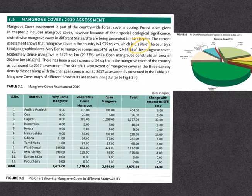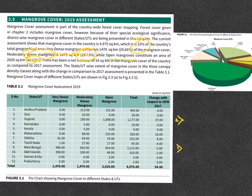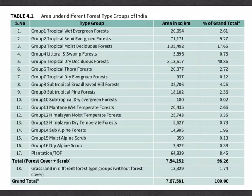As per the report, the total mangrove cover in India is 4,975 square kilometers, which is 0.15% of the country's total geographical area. The largest share is held by open mangroves at 40%, followed by moderately dense mangrove at 29.73%, and very dense mangroves at 29.66%. The top two states with highest mangrove cover are West Bengal and Gujarat. Tamil Nadu, West Bengal, and Andaman & Nicobar Islands have shown a decrease in mangrove cover compared to the 2017 report.